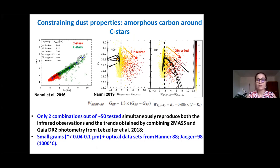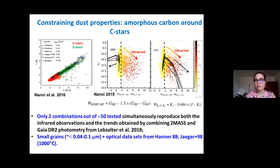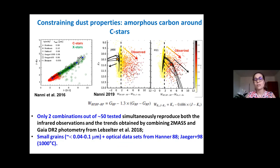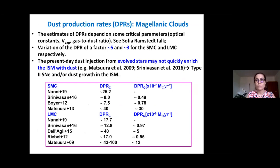Just to mention — I won't enter the details — but this kind of constraint can be derived, in particular related to the dust properties of amorphous carbon around carbon-rich stars. The main goal of this work was to constrain the optical properties that best reproduce the spectral energy distribution and photometry of carbon stars in the Magellanic Clouds — constraining the typical grain size together with the optical data sets available in the literature.